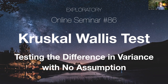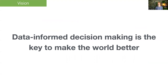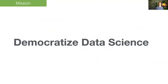It is about testing the difference in variance with no assumption. Before getting into it, let me introduce myself. My name is Kan Nishida, CEO at Exploratory. We started Exploratory back in 2016 to democratize data science by building a tool called Exploratory, making it easier to access various data science methods to understand your own data. Our vision is data-informed decision-making is the key to make the world better. Therefore, we want to democratize data science.